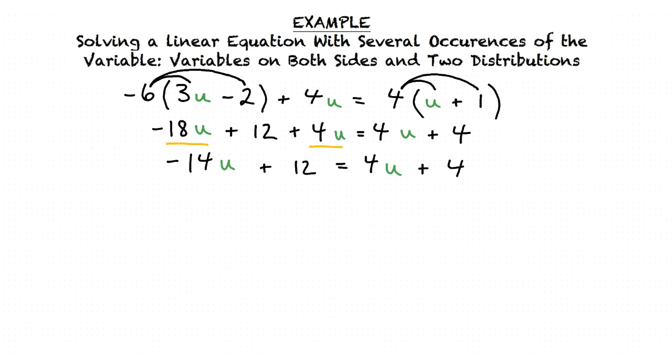Our first step will be to subtract 4u from both sides. Negative 14u minus 4u is negative 18u. Our next step will be to subtract 12 from both sides. After subtracting 12 our equation is negative 18u equals negative 8.